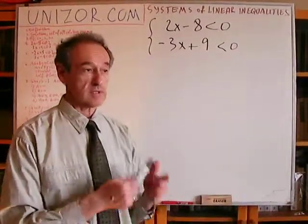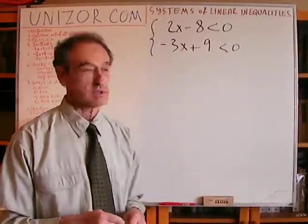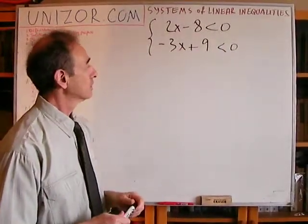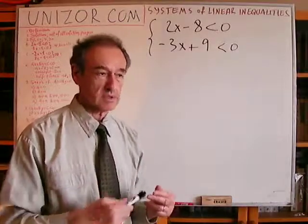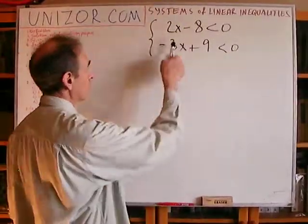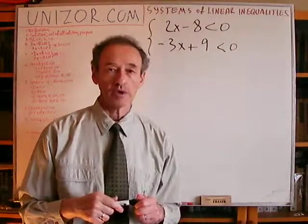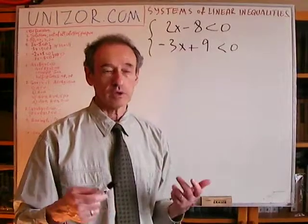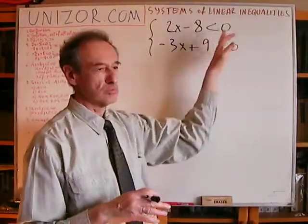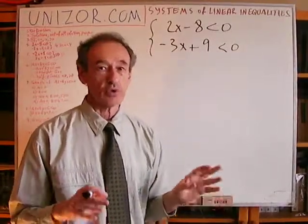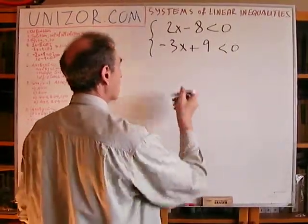There is nothing wrong with having two conditions on one argument. You can have a system of m inequalities with n arguments. In this particular case I have two linear conditions and only one argument. We will use graphical representation of these conditions quite extensively. Since it's one argument, the graphical representation of all values is a straight line, where all the real numbers can be presented as points. We do assume in 99.9% of cases we are talking about real values of the variables.